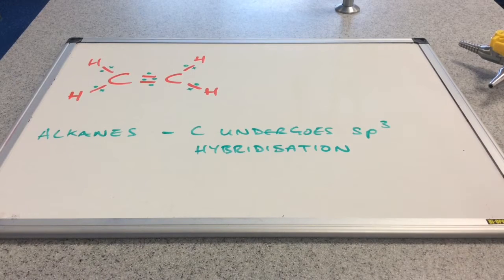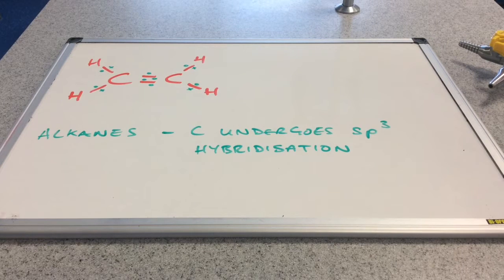In a previous video I've looked at the alkenes and explained that the carbon atoms in alkenes actually undergo something called sp³ hybridisation.